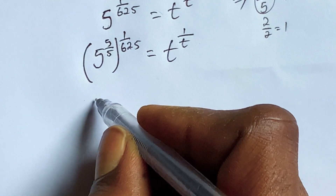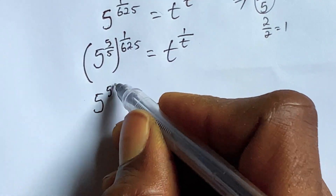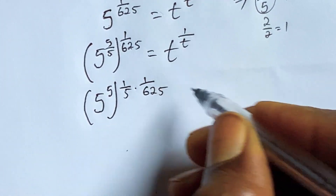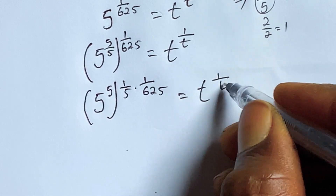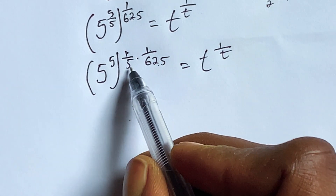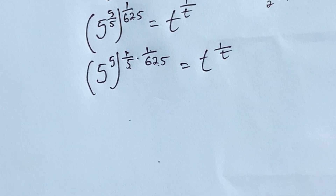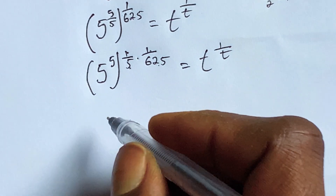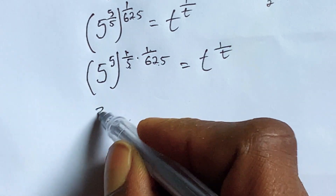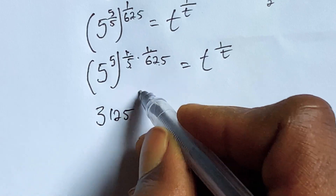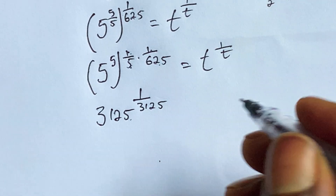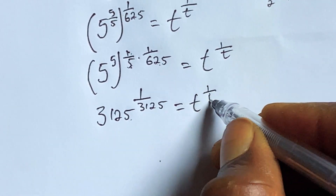We have 5 raised to the power of 5, and 1 over 5 multiplied by 1 over 6/5, equivalent to t to the 1 over t. So 1 multiplied by 1 gives 1, and this multiplied by this: 5 to the power of 5 is 5 × 5 × 5 × 5 × 5, which gives us 3125. So the result is 1 over 3125, and this equals t over t.